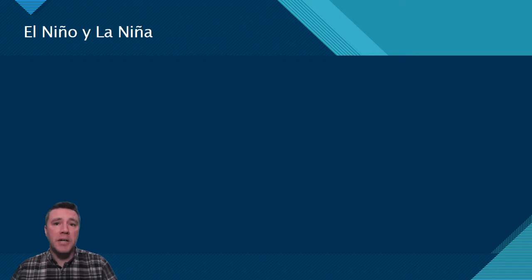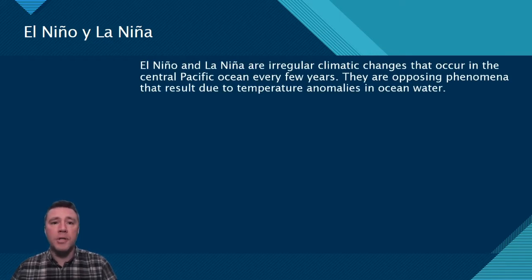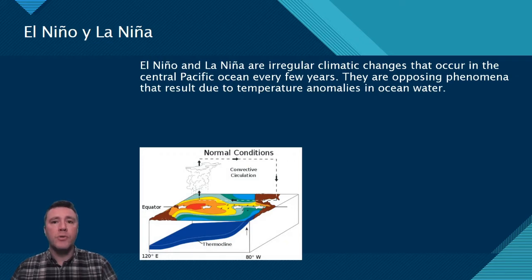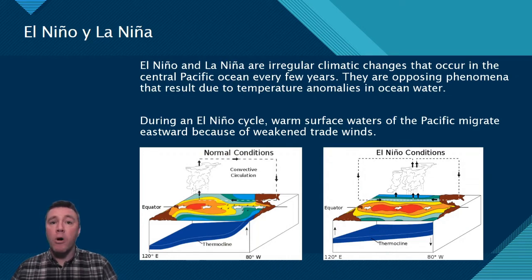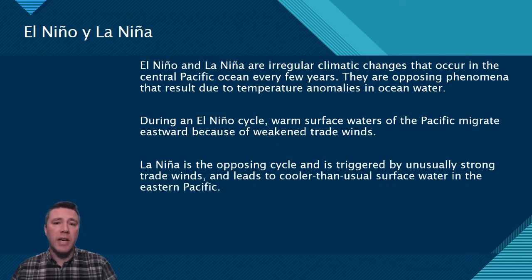El Niño and La Niña are opposite climatic phenomena that cycle in the Pacific Ocean every few years. In a neutral year, surface winds push warmer water away from the Americas toward the western Pacific. During an El Niño cycle, for reasons not yet well understood, the trade winds weaken, allowing relatively warmer surface waters to move toward the Americas. La Niña is the exact opposite — unusually strong trade winds drive warm surface waters away from the Americas even more strongly, resulting in significantly cooler water in the eastern Pacific.